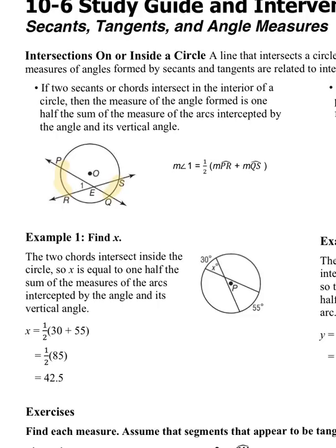So in this case, as they have it on the paper, if we were looking for angle one, we would figure out the measure of arc PR, add the measure of arc QS, and divide by two.